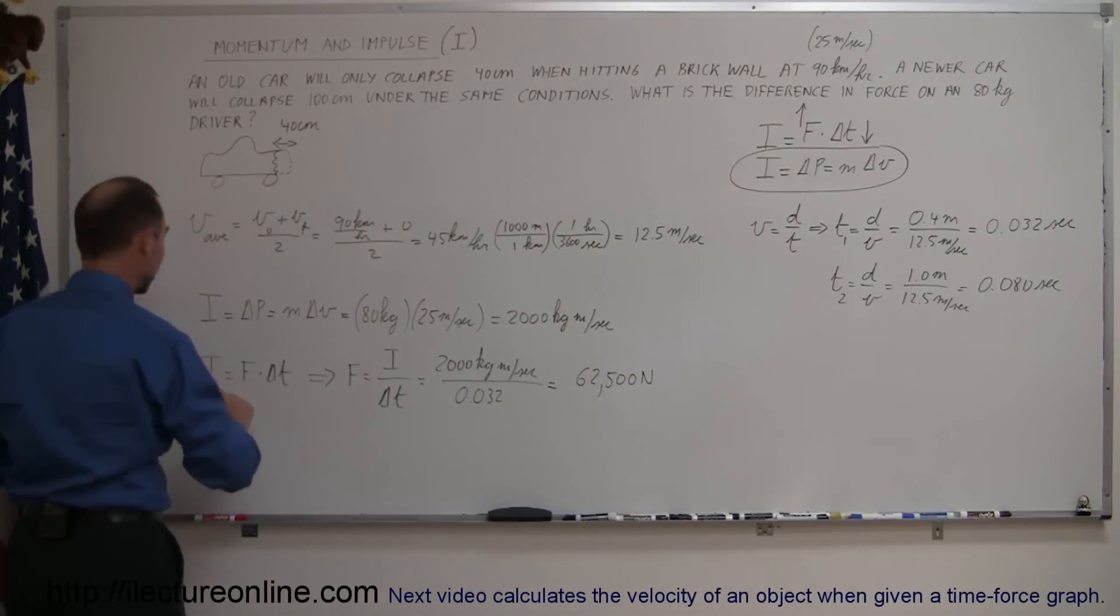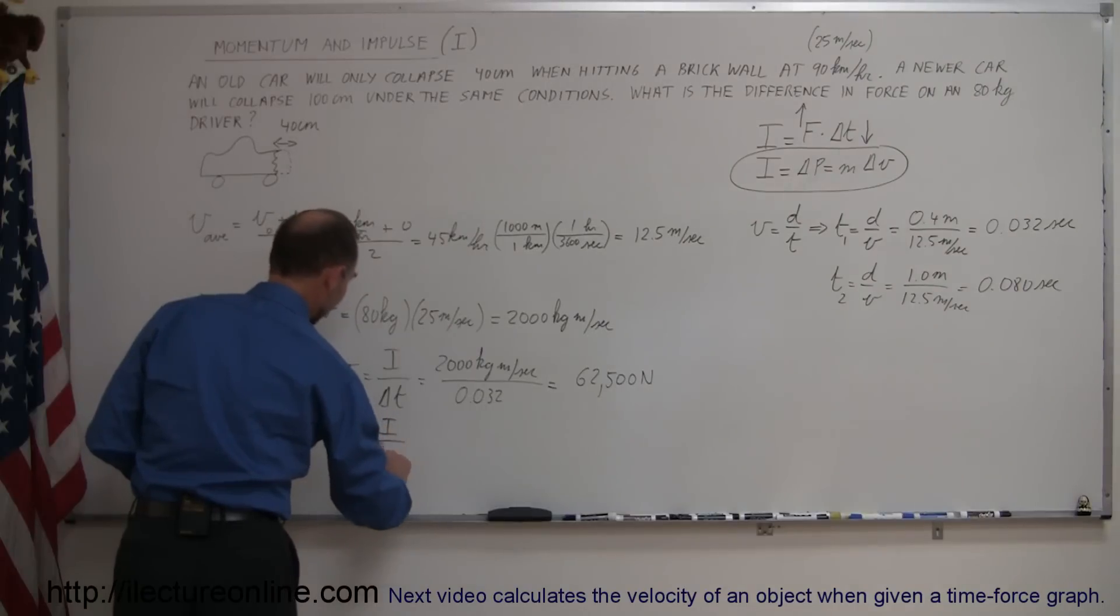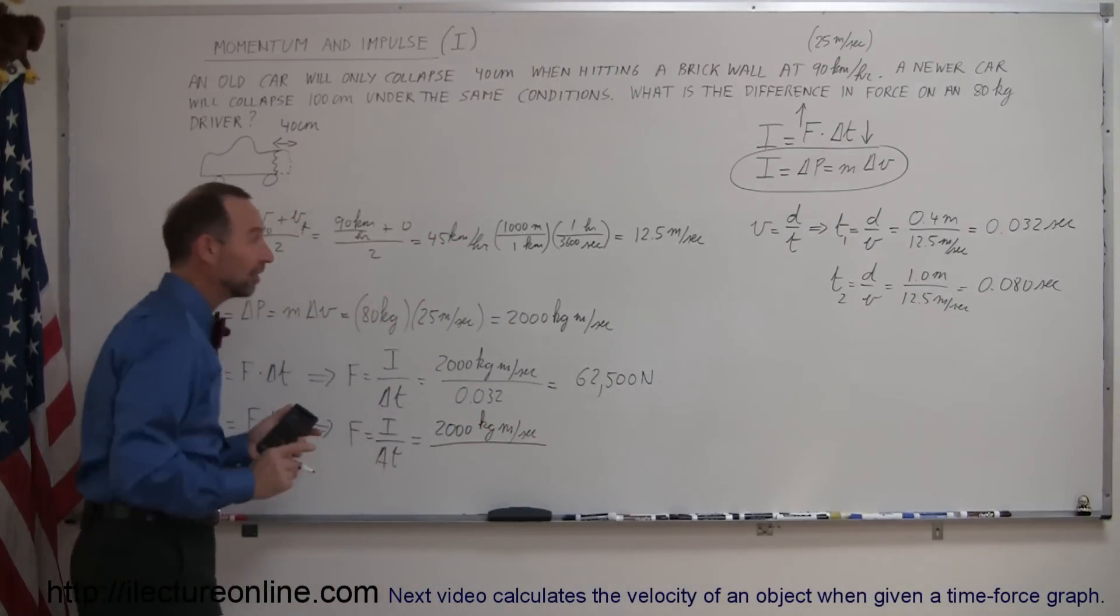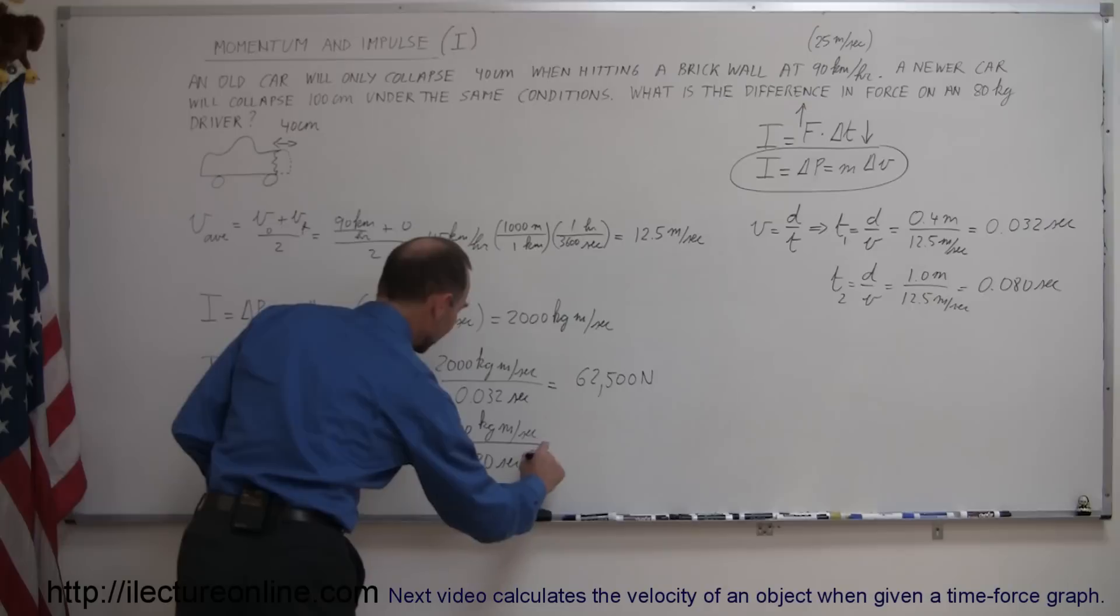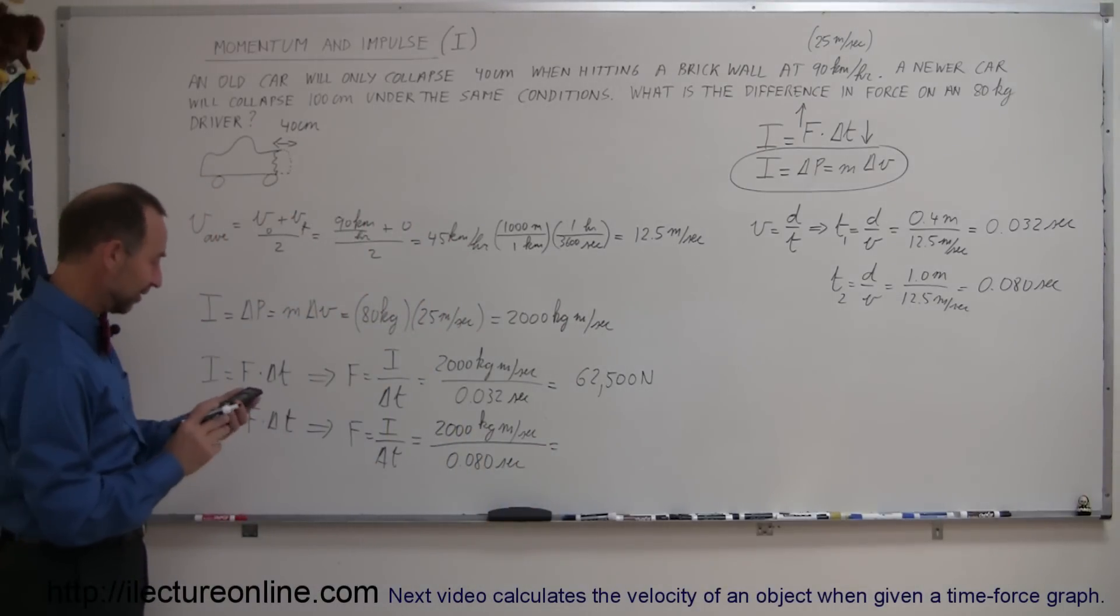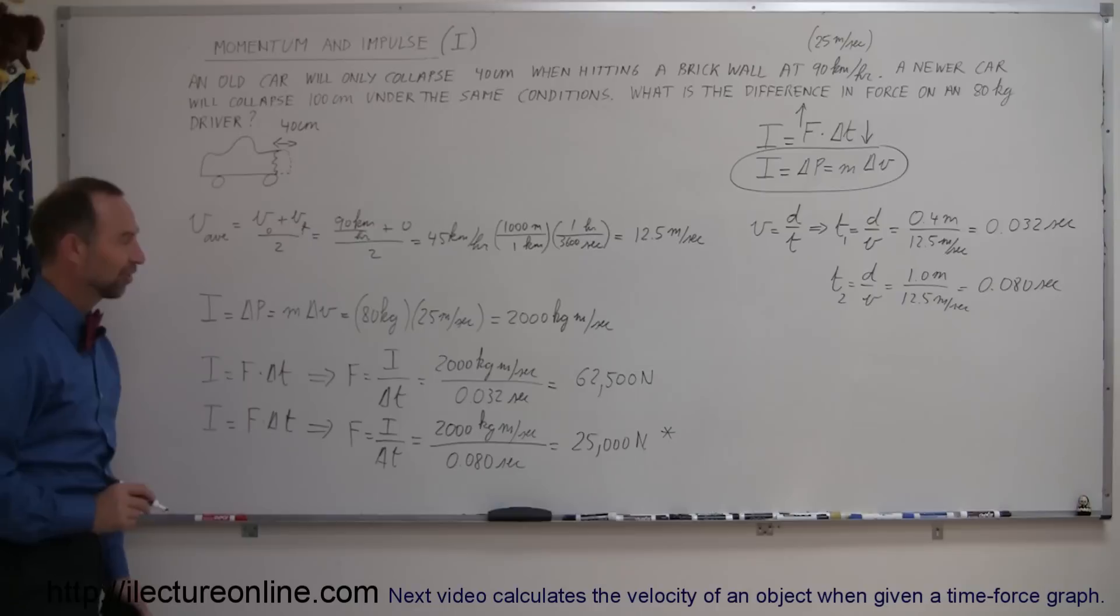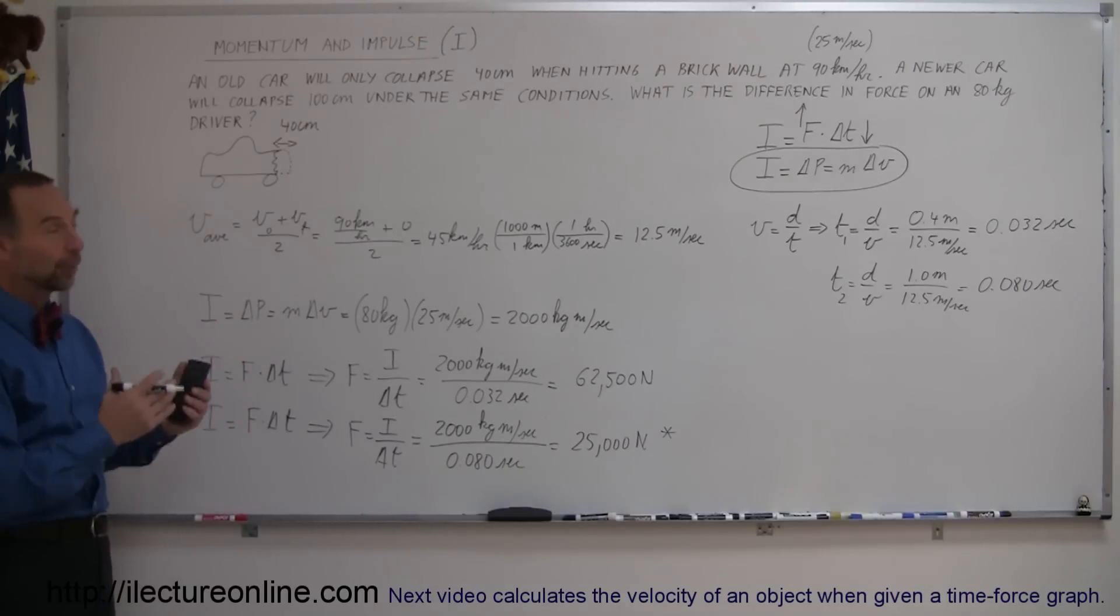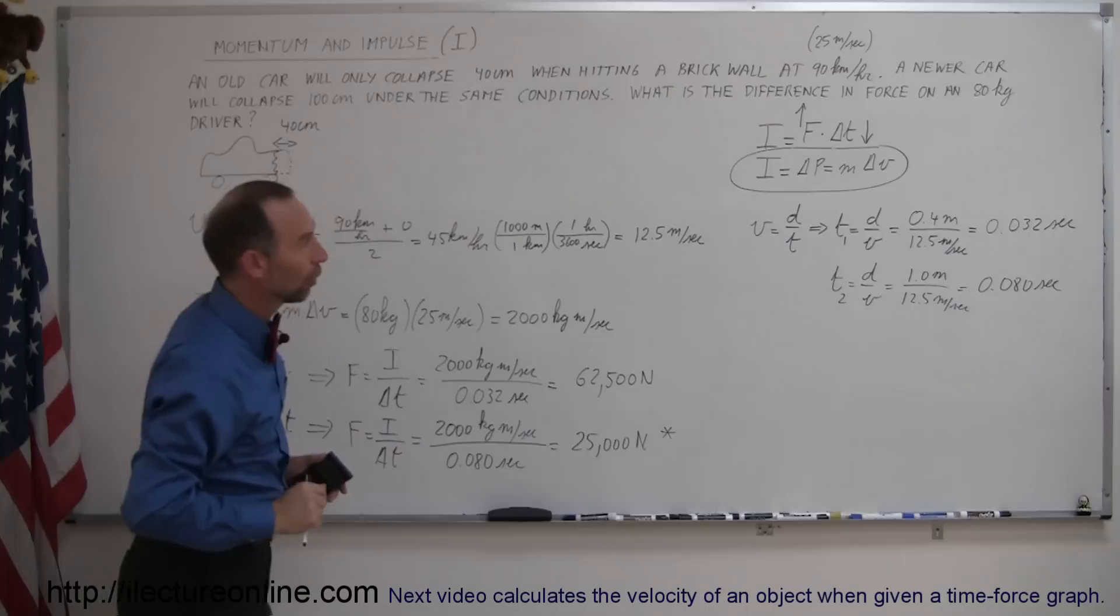If we do the same thing for the newer car, the impulse being the same, force times delta T. Solving this for F is equal to I divided by delta T. Plugging those numbers in, we get 2,000 kilograms meters per second divided by, in this case it took a whole 80 milliseconds. It may not seem like a lot, but that's an additional 48 milliseconds. And if we do the very same calculation but with a different time, we only have a force of 25,000 newtons. So definitely a lot easier on the chest when you hit a brick wall going 90 kilometers per hour. A lot less force if you drive a newer car that crumples over greater distance, offering a greater amount of time for the car to come to a stop, and therefore, since impulse is force times delta T, a lot less force because it's distributed over a greater amount of time.